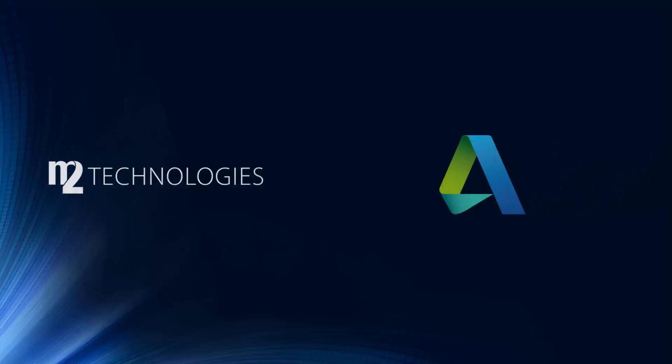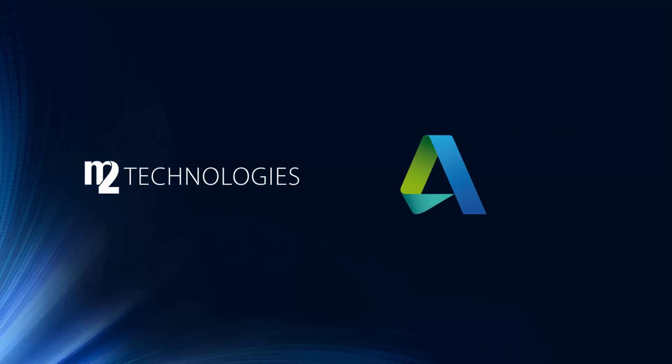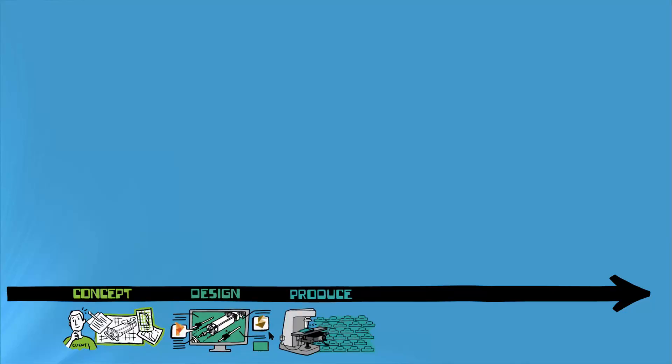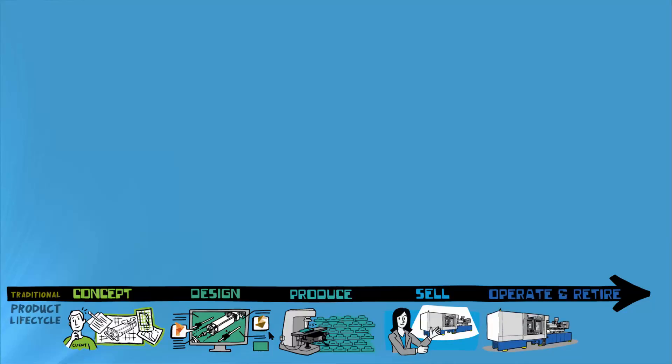M2 partners with Autodesk because Autodesk is looking forward beyond the needs of industry today. We aim to prepare our customers to thrive in what Autodesk calls the 'future of making things.' Many manufacturing organizations today adhere to a standard linear product development process broken up into five primary phases: concept, design, production, sales and marketing, and finally operation and retirement.